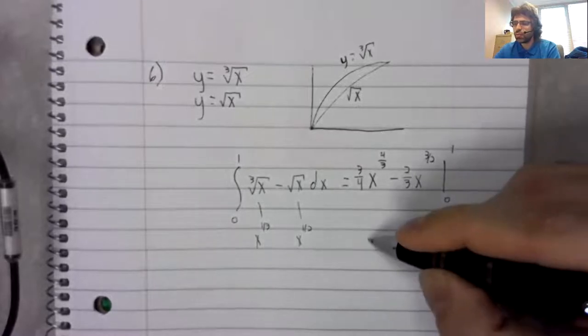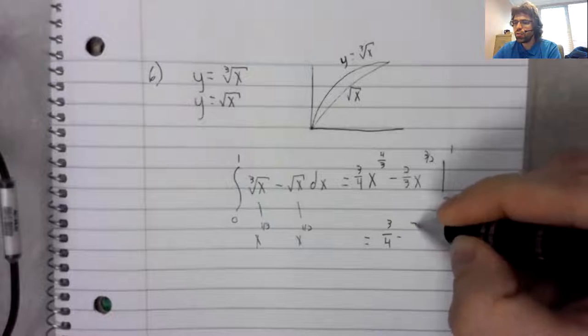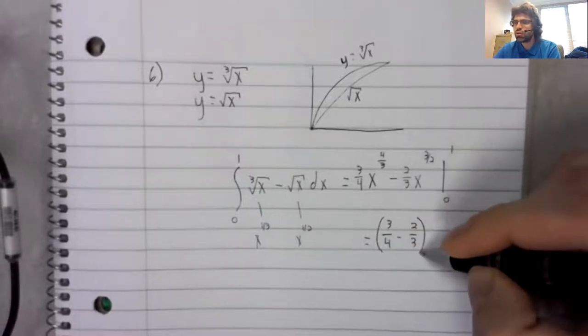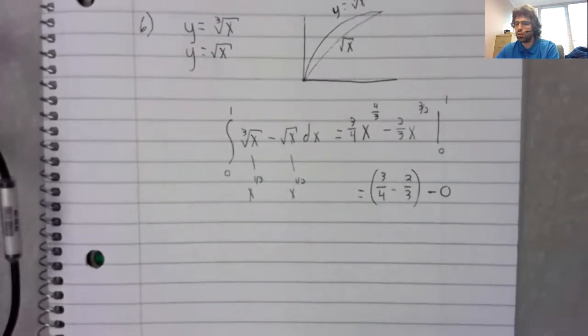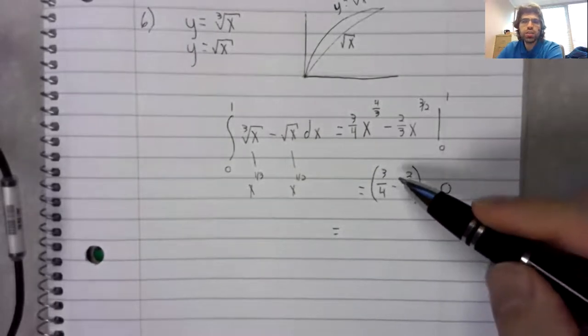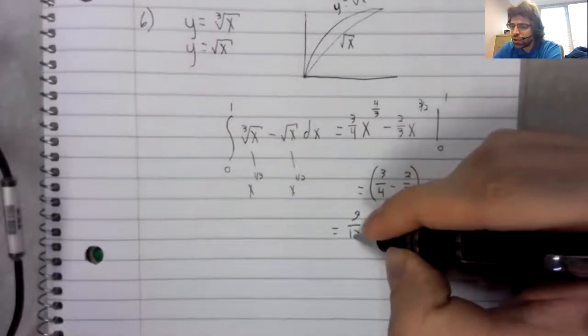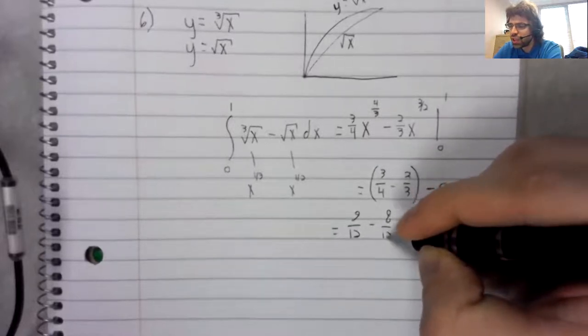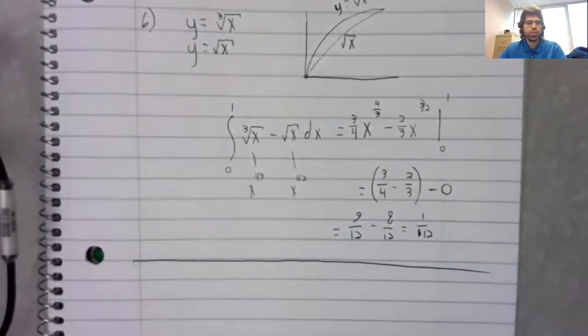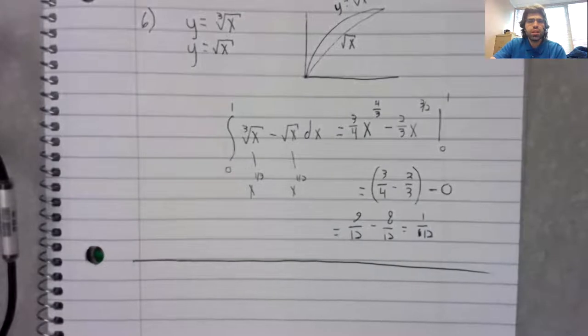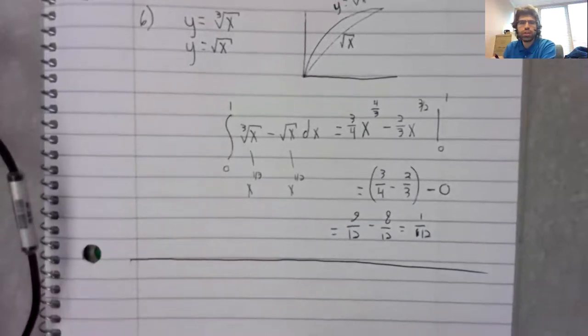We're going from zero to one. Plug in one, we get three fourths minus two thirds. Plug in zero, we get zero. We need a common denominator, that would be 12. So nine twelfths minus eight twelfths makes that area one twelfth.